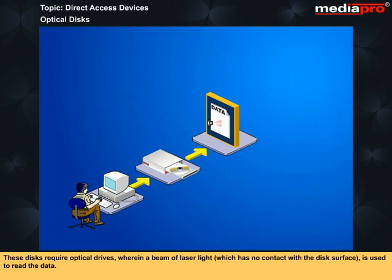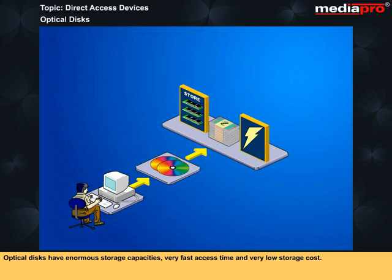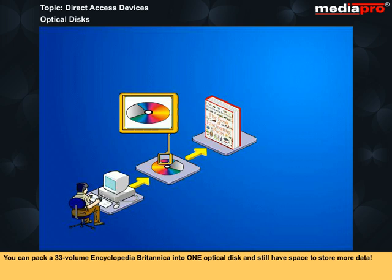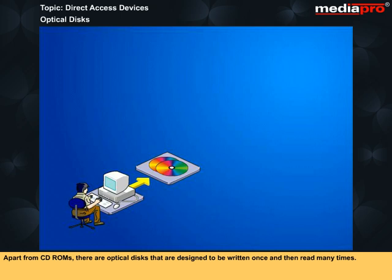These disks require optical drives wherein a beam of laser light which has no contact with the disk surface is used to read the data. Optical disks have enormous storage capacities, very fast access time and very low storage cost. You can pack a 33-volume Encyclopedia Britannica into one optical disk and still have space to store more data. Apart from CD-ROMs, there are optical disks that are designed to be written once and then read many times. These are called WORM or write-once-read-many systems.